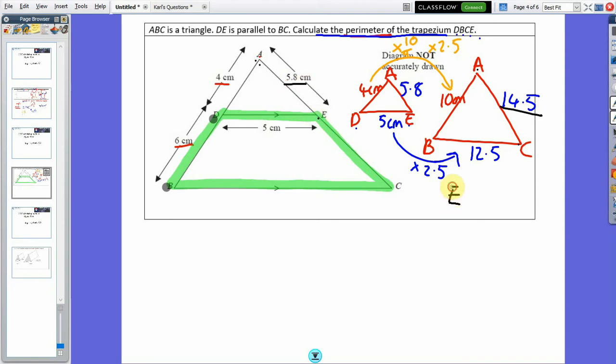So E to C is going to be 14.5 take away 5.8, which gives me 8.7. So I know this length here is 8.7 centimeters.